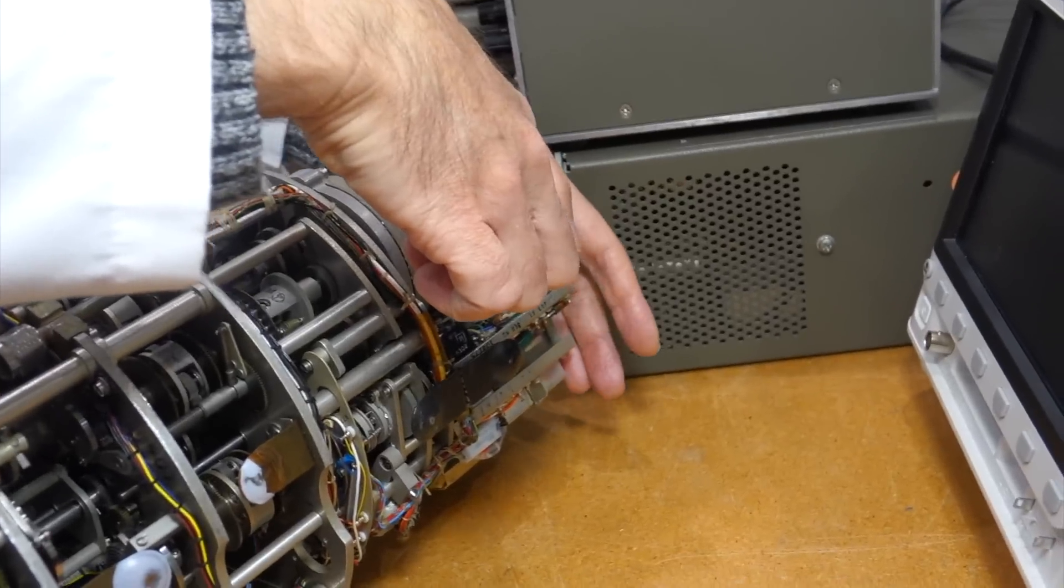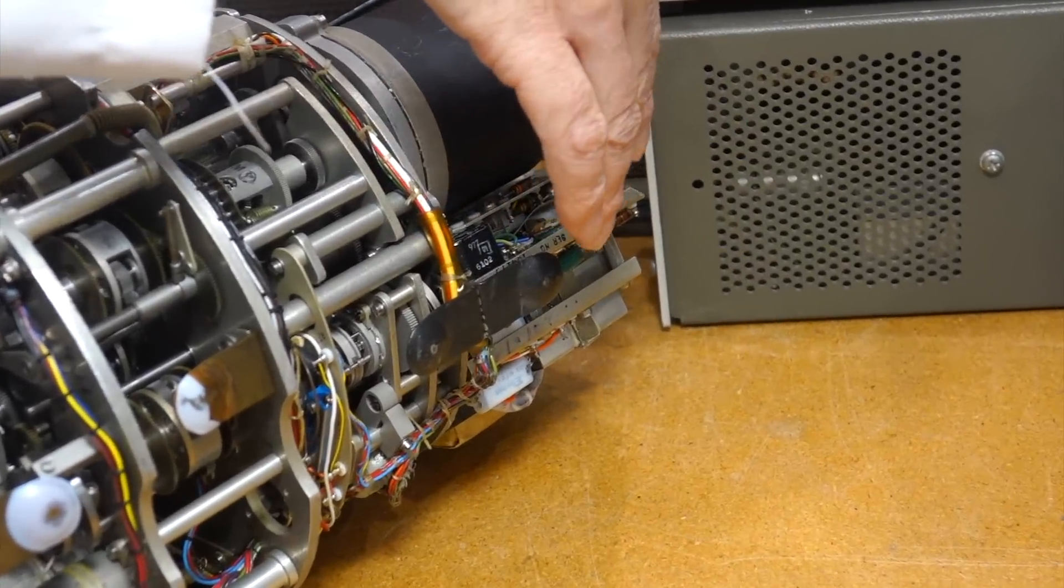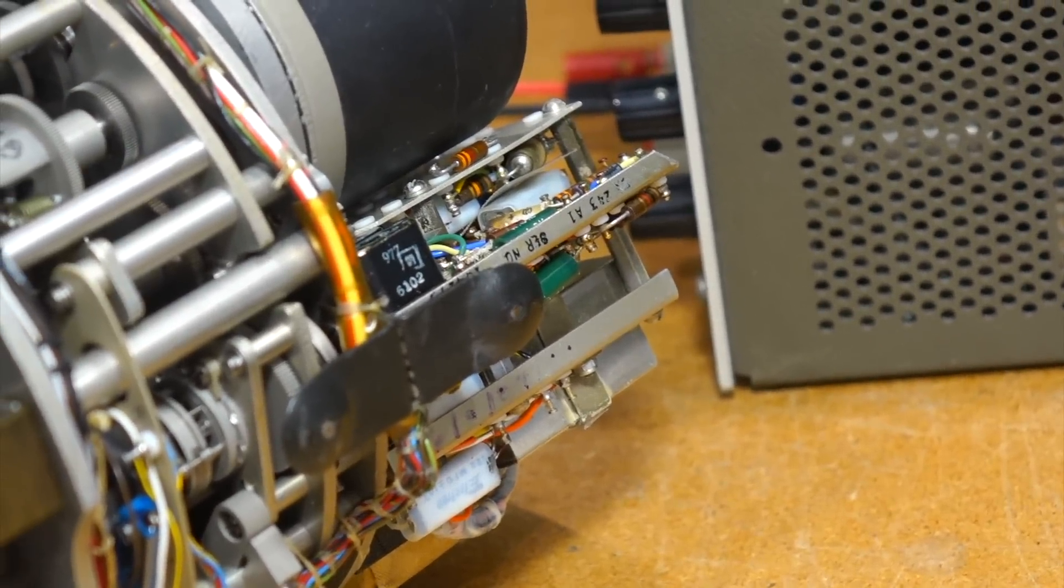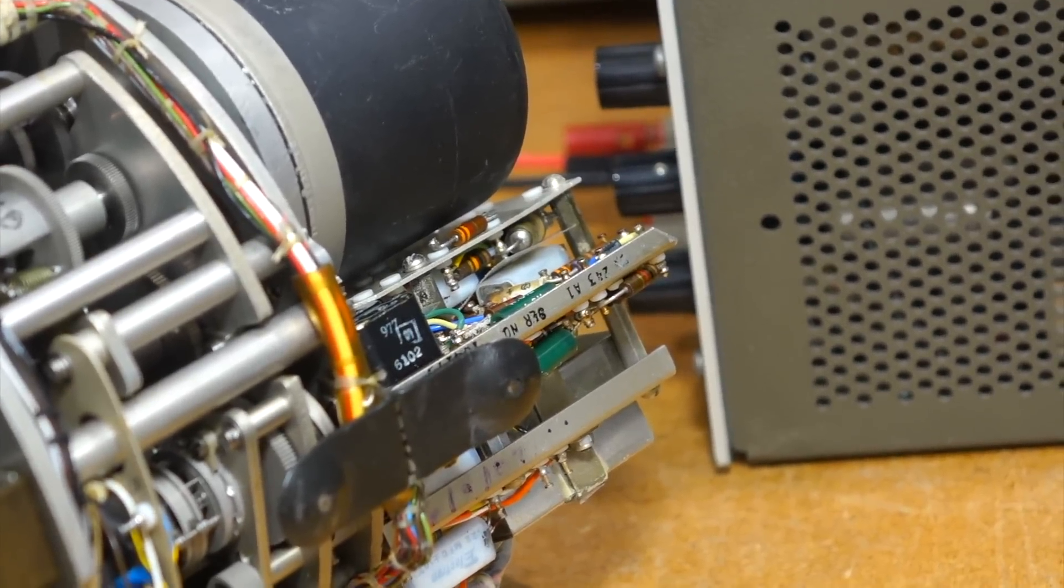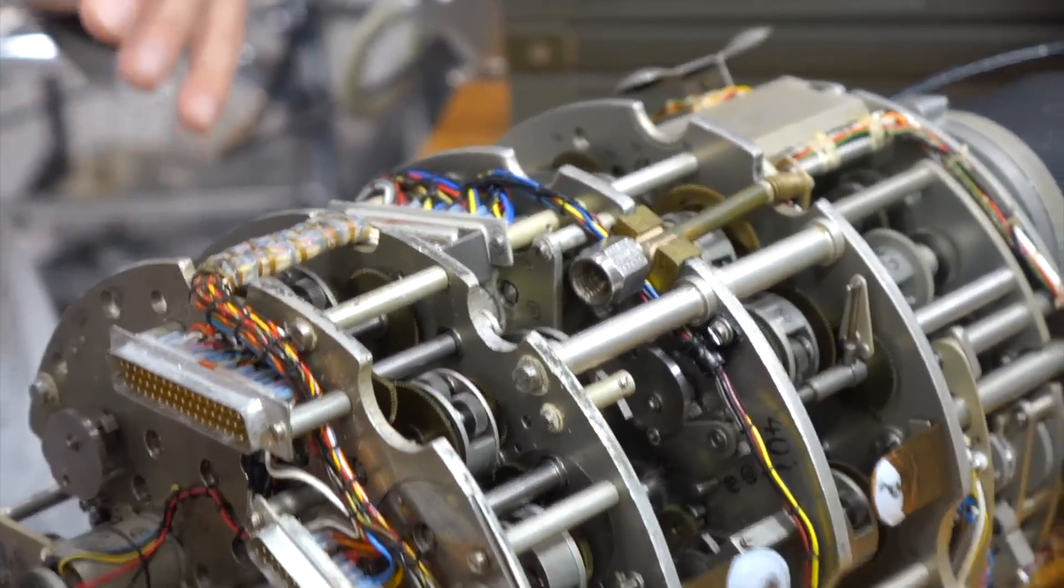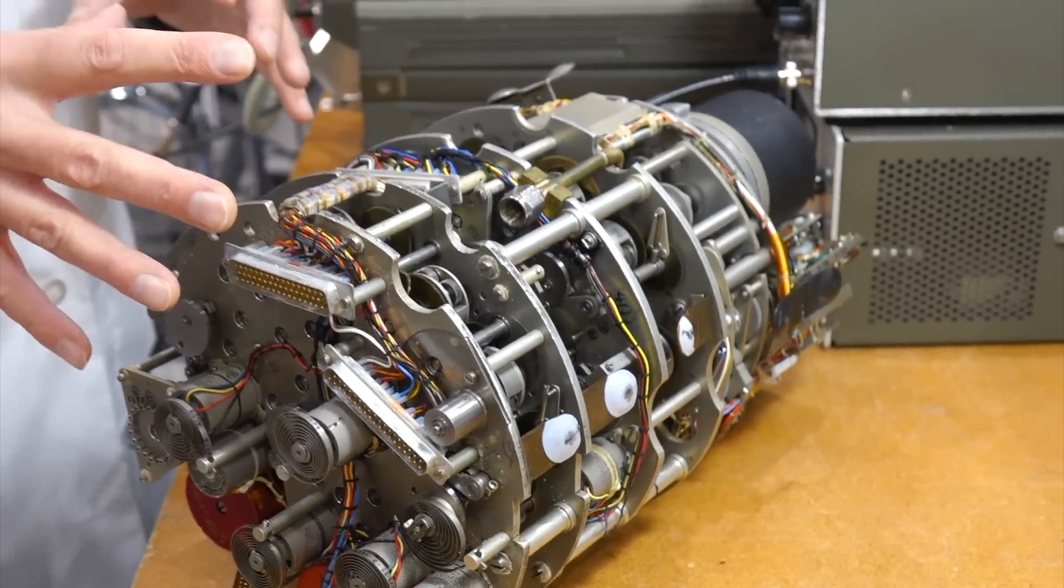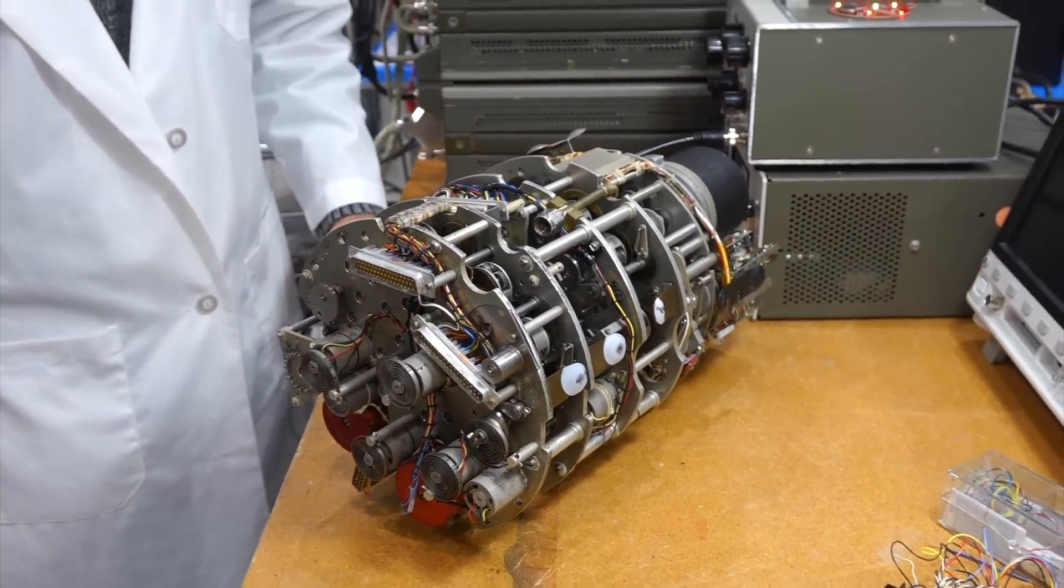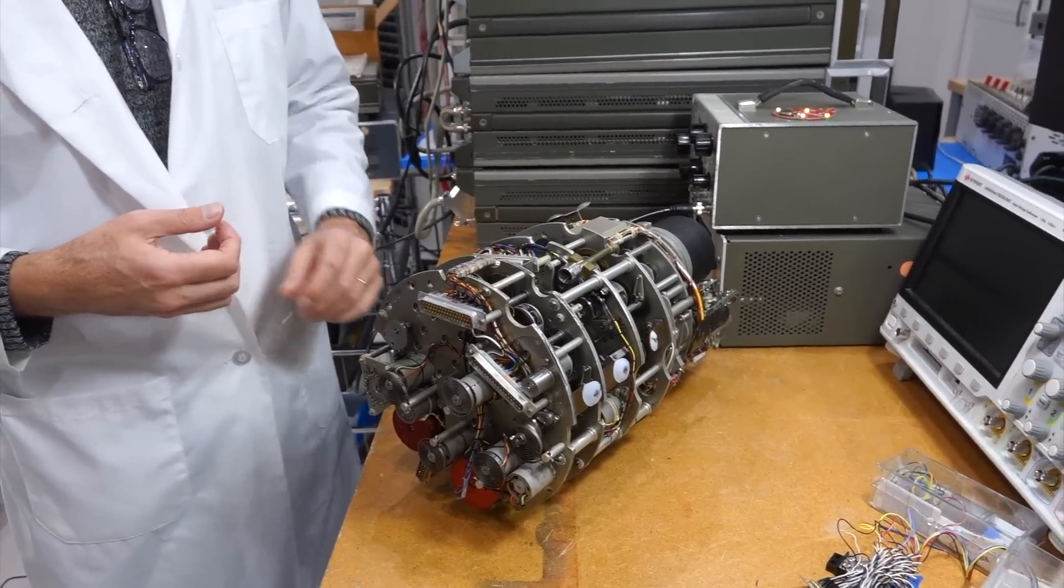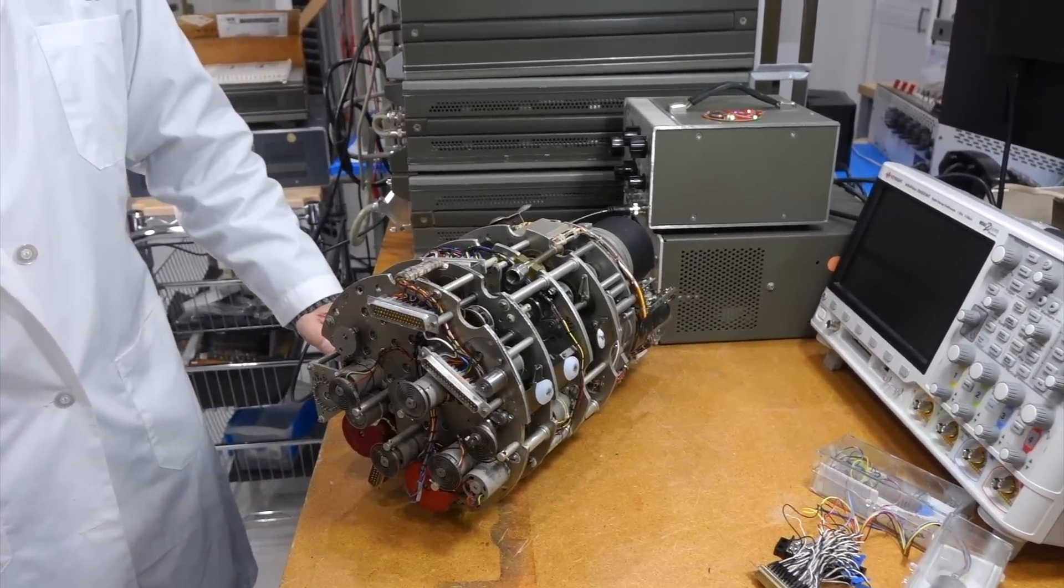And then there's these boards here are basically the error amplifiers. They use magnetic amplifiers to generate the motor driving signals. I think it's an H-bridge, famous magnetic amplifier. Yeah, this thing is powered by 115 volts AC at 400 hertz. And then the synchros themselves have a separate 26 volt AC 400 hertz supply.